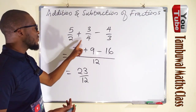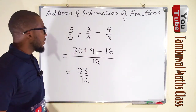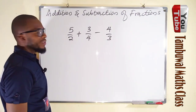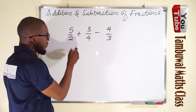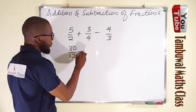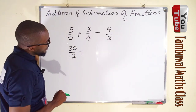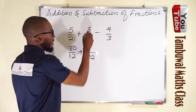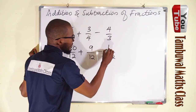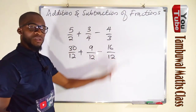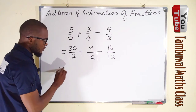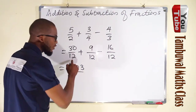Again, we can transform each denominator to be exactly 12, since that is their LCM. Multiply 2 by 6 to get 12, and multiply the numerator 5 by 6 to get 30. Multiply 4 by 3 to get 12, and multiply the numerator 3 by 3 to get 9. Multiply 3 by 4 to get 12, and multiply the numerator 4 by 4 to get 16. Now 30 plus 9 is 39, minus 16 is 23, over the common denominator 12.